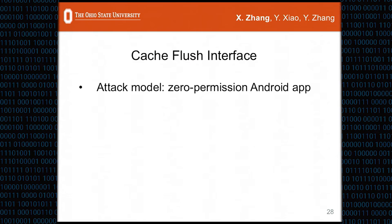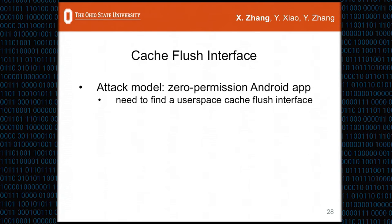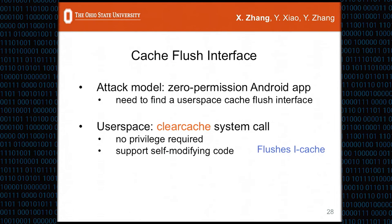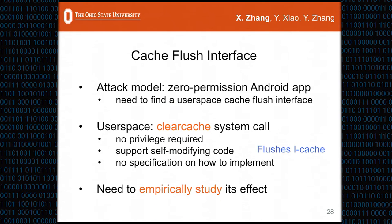Our attack model is that the attacker uses a zero-permission Android app to perform the attack. We need a user-space cache flush interface requiring no privileges. We found a system call called clear_cache. ARM does not maintain coherence between the data cache and the instruction cache, so to run self-modifying code, applications must call the clear_cache system call to flush modified code from the instruction cache. However, there is no specification on how to implement this system call—specifically, whether flushing the L1 instruction cache also flushes the shared L2 cache. Therefore, we need to empirically study the effect of clear_cache.